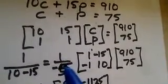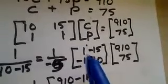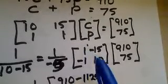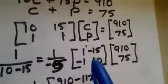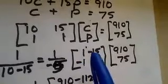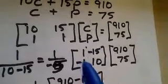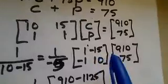So we have 1 over negative 5. The only thing we do now is switch the elements of the main diagonal and take the other diagonal and make the signs opposite. Finally, we multiply all of this times our constant matrix.